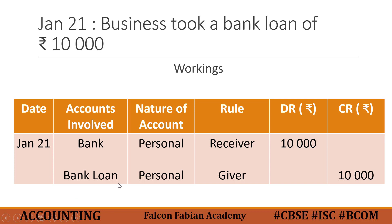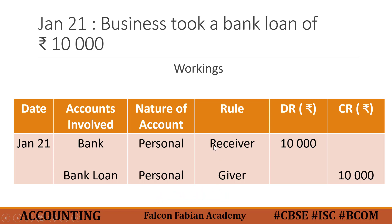The second account is bank loan. Bank loan is given by the bank, which is an organization giving money to the business. Therefore, the rule of personal account is also applied to it. The rule is: debit the receiver and credit the giver. So bank loan account needs to be credited by 10,000. To summarize: bank account is the receiver, so it is debited by 10,000, and bank loan is the giver, so it is credited by 10,000.